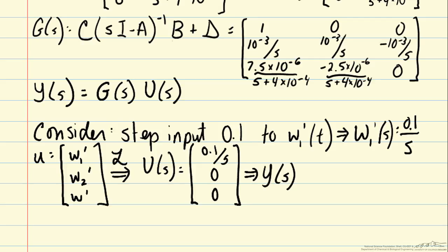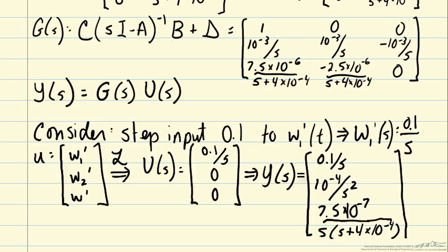We can write Y(s) as the product of G(s) and U(s), and get 0.1 over s, 10 to the minus 4 over s squared, and 7.5 times 10 to the minus 7 over s times (s plus 4 times 10 to the minus 4). Just by multiplying the matrix G(s), which is a 3 by 3 matrix, times the column vector U(s), which has three rows.